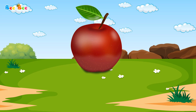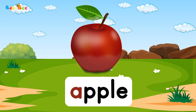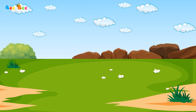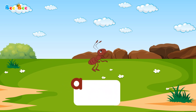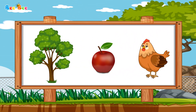A is for apple — a, apple. A is for ant — a, ant. And now, which picture begins with the sound 'a'?